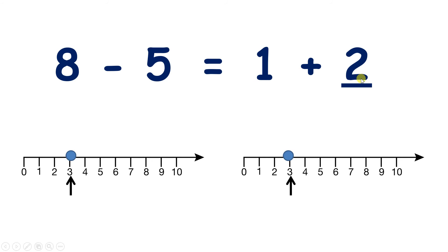And if I write 2 here, then both sides of the equal sign give me the same amount. 8 minus 5 is 3, 1 plus 2 is 3.